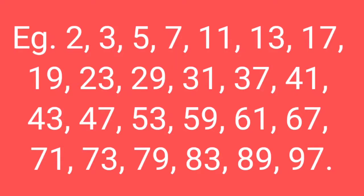By looking at these examples, we can also see that there are 15 prime numbers from 1 to 50. These 15 prime numbers are: 2, 3, 5, 7, 11, 13, 17, 19, 23, 29, 31, 37, 41, 43, and 47.